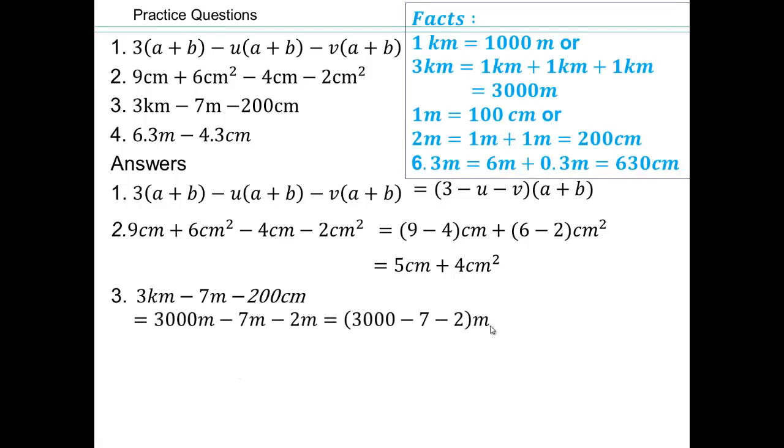Let's do some work here. 3 kilometers is going to be 3,000 meters. 200 centimeters is going to be 2 meters. And then we have everything in meters. So now we can perform the subtraction, giving us 3,000 minus 9, which is 2,991 meters.